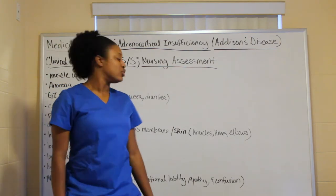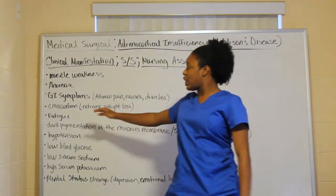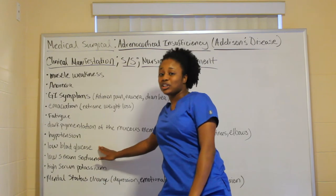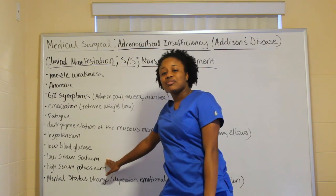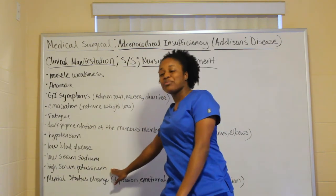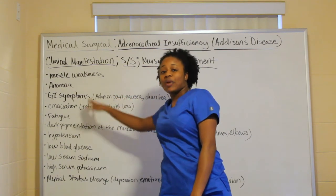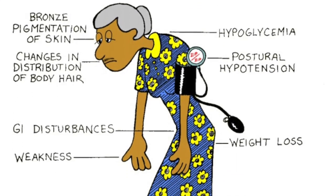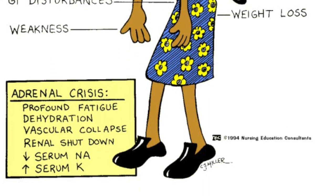Mental changes in Addison's include depression, emotional lability that fluctuates up and down, apathy, and confusion. To summarize the differences: Addison's — hypotension, low blood glucose, low serum sodium, high potassium, poor appetite and weight loss. Cushing's — hypertension, high blood glucose, high sodium, low potassium, and truncal obesity. It's like a complete mirror opposite.